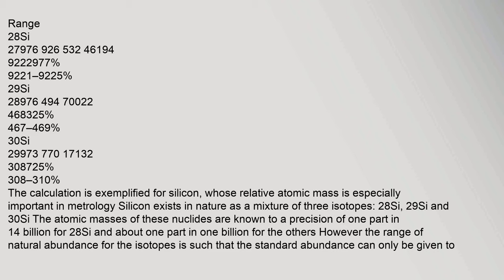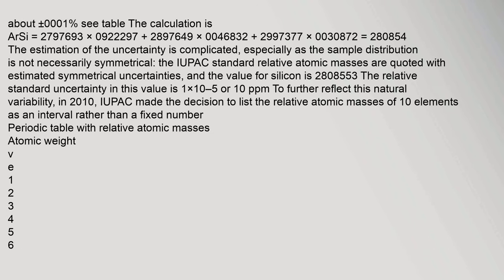The calculation is exemplified for silicon. Silicon exists in nature as a mixture of three isotopes: 28Si, 29Si, and 30Si. The calculation is Ar(Si) = 27.97693 × 0.922297 + 28.97649 × 0.046832 + 29.97377 × 0.030872. The IUPAC standard relative atomic masses are quoted with estimated symmetrical uncertainties, and the value for silicon is 28.08553.